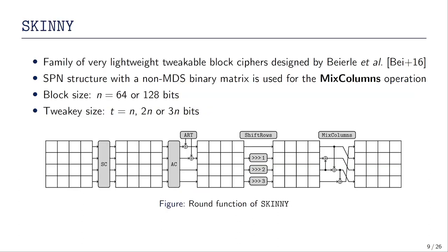Why SKINNY? SKINNY is a very easy block cipher. In particular, the mixed column matrix is a binary matrix, which simplifies a lot the corresponding constraint for valid transitions through the mixed columns. The tweaky schedule is linear, which also simplifies a lot all the models. And both the DDT of the 4-bit S-Box and of the 8-bit S-Box do contain a lot of different values, which is very interesting for differential cryptanalysis techniques.